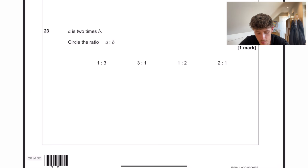A is 2 times B. In these situations, what I say to people is make up some numbers. So if A equals 10, B must equal 5. So that means A to B would be 10 to 5, which is the same as 2 to 1, which will be that one there.